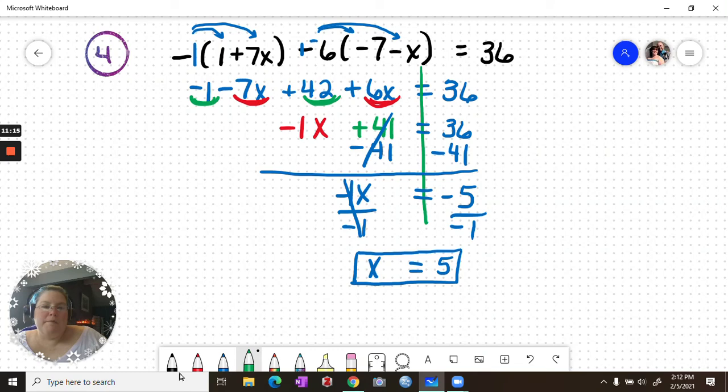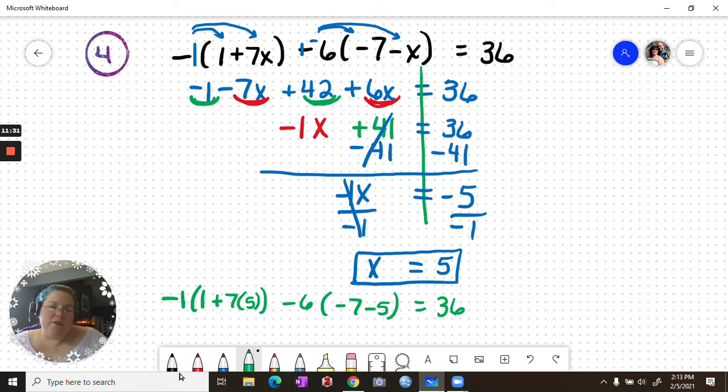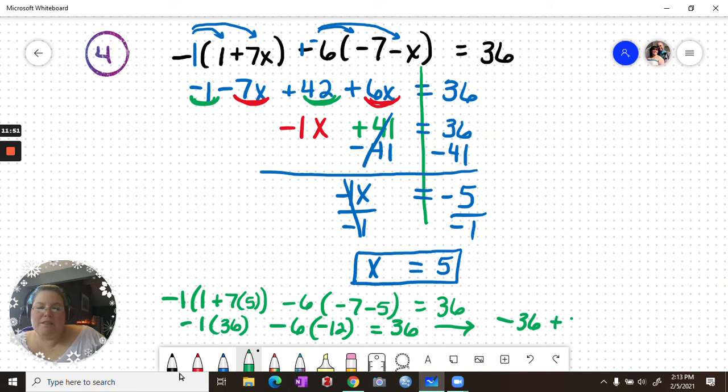And again, we can check our answer by doing negative 1 times 1 plus 7 times 5 minus 6 times negative 7 minus 5 and see if that equals 36. So here, that's 35, 36, so negative 1 times 36 minus 6 times negative 12 equals 36. That gives me negative 36 plus 72, and that does equal positive 36.